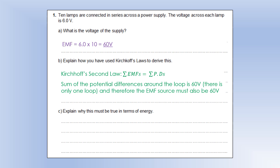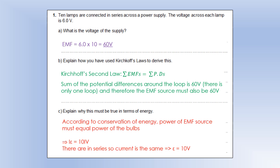Explain why this must be true in terms of energy. According to conservation of energy, the power of the EMF source must equal the power of the bulbs — the joules per second we take out must equal the joules per second we put in. Using P equals IV: power input is current times EMF; power output is 10 times current times potential difference. They're in series so the current is the same, the I's cancel, and we get the EMF as 10V.